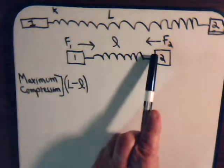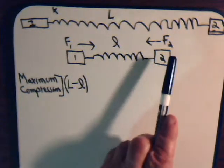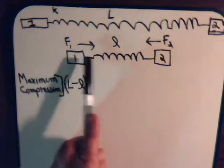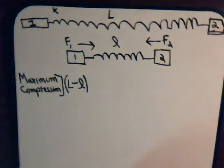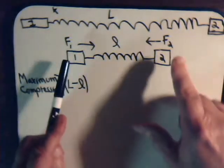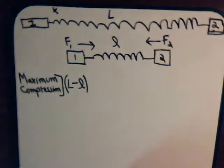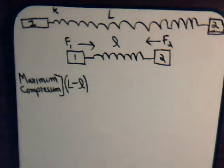So F1 and F2 are equal in magnitude and opposite in direction. That means the net external force we're applying to this system is zero — F1 plus F2 add up to zero. And whenever we have a mechanical situation where the net external force applied to it is zero, there's no change in the momentum of the system.